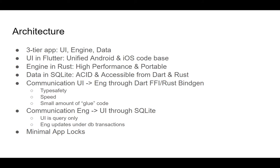The communication between the first tier — the UI — to the engine is done through Dart FFI, which stands for Dart foreign function interface. It is a binding to C, so we have to create C bindings for Rust with the BindGen tool. We can then also generate FFI bindings with the Dart code generator, ffigen.